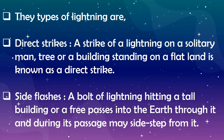The meaning of direct strike is a strike of lightning on a solitary man, a tall tree, or flatland. Side flash means a bolt of lightning trying to earth through a tall building. If we walk near at that time, the electric current earths through our body, because it is hard to earth through a building as they are insulators, while our body is an electric conductor.